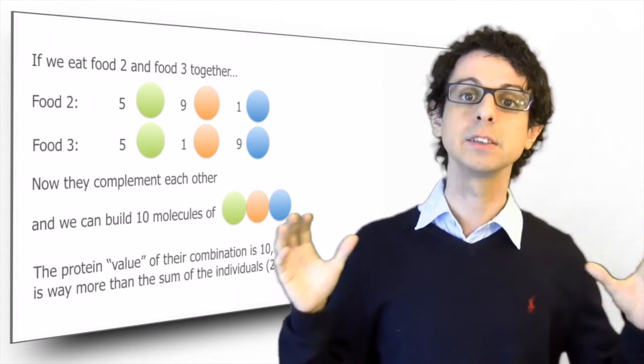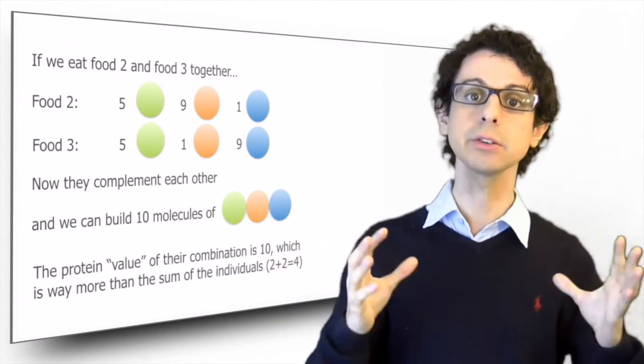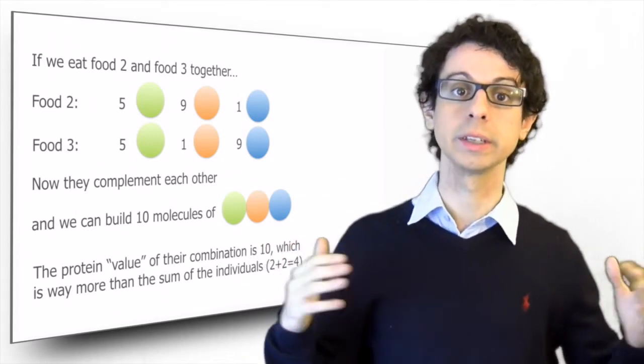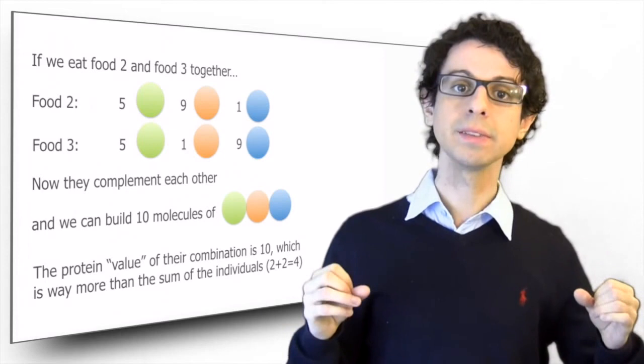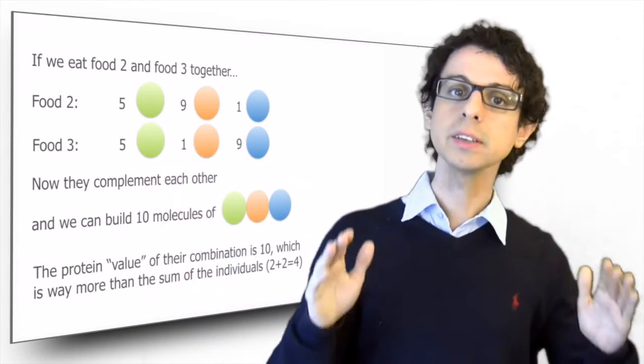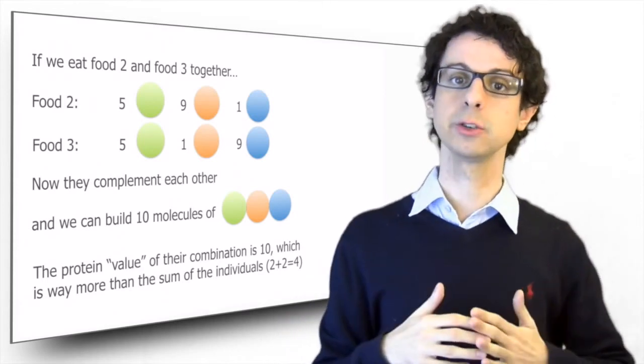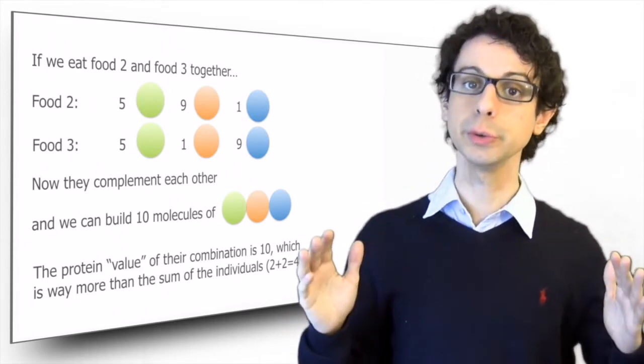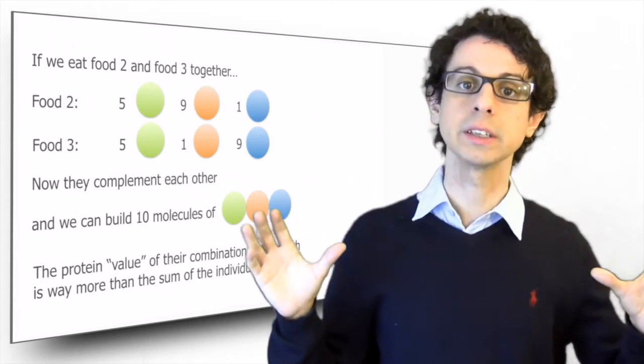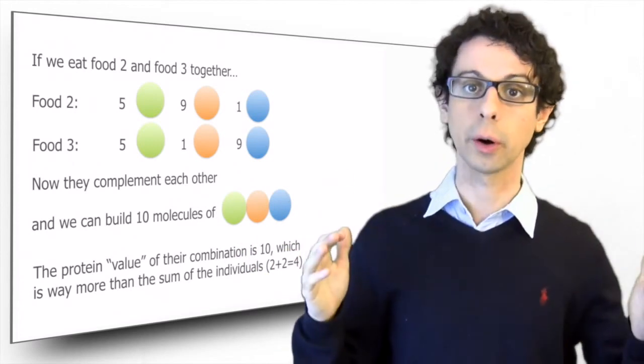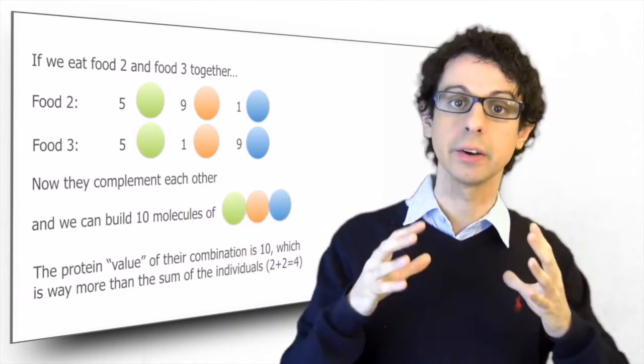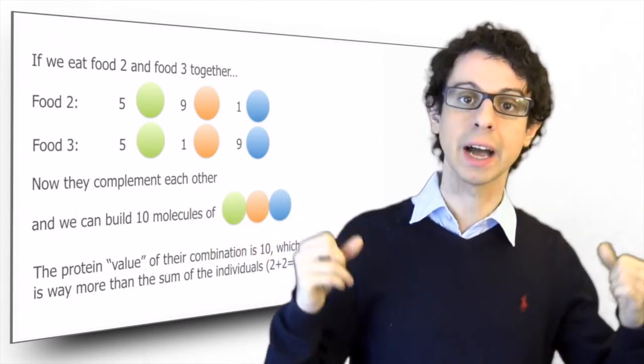Because of the way these two low quality foods mutually integrate each other, they complement each other and result in a high protein quality meal. The protein value of the combination of these two foods is now 10. Notice that 10 is more than just the sum of the individual protein values of the single foods. If we had eaten one at lunch and one at dinner, the total protein quality would have only been 2 plus 2, 4. But by eating them together, because of the way they integrate each other, then we have a much higher protein value.